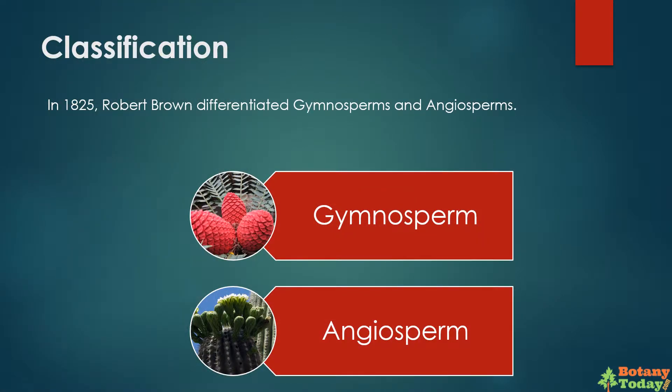Let's now see the classification of Phanerogams. In 1825, Robert Brown differentiated gymnosperms and angiosperms. Thus, Phanerogams are divided into two groups: gymnosperm and angiosperm.